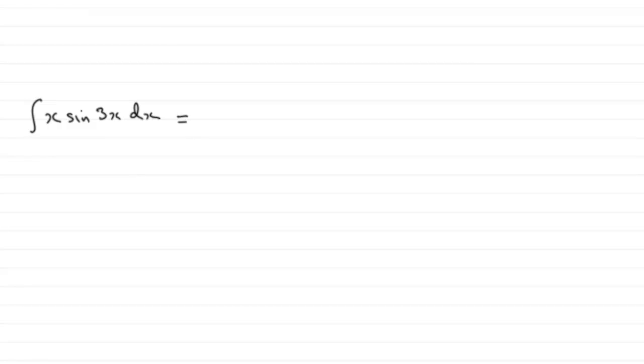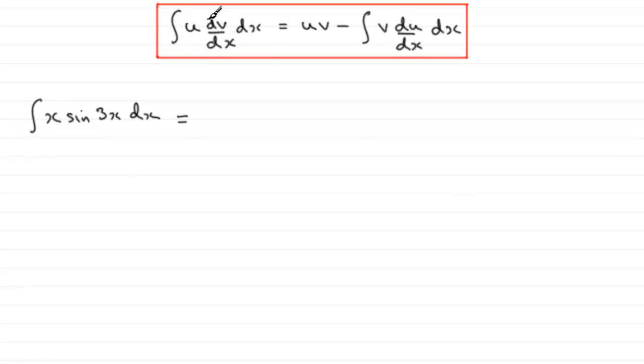But essentially, just as a quick reminder, if you've got two parts, say u and dv by dx and you're integrating with respect to x, you just take one part, you times it by the integral of the other part, and you just do minus the integral of the part you just integrated, times it by the differential of the first part and integrate with respect to x.